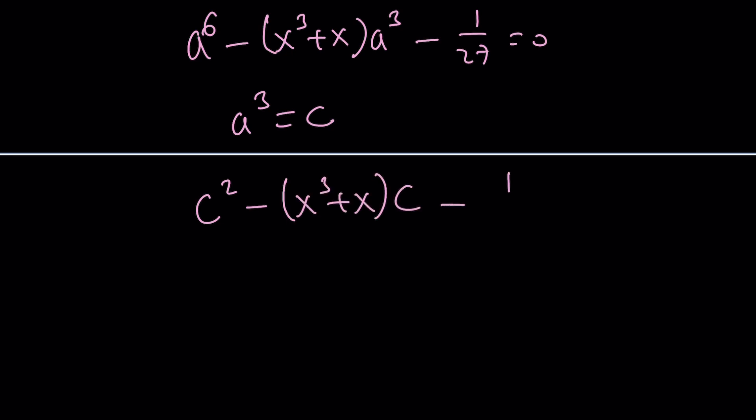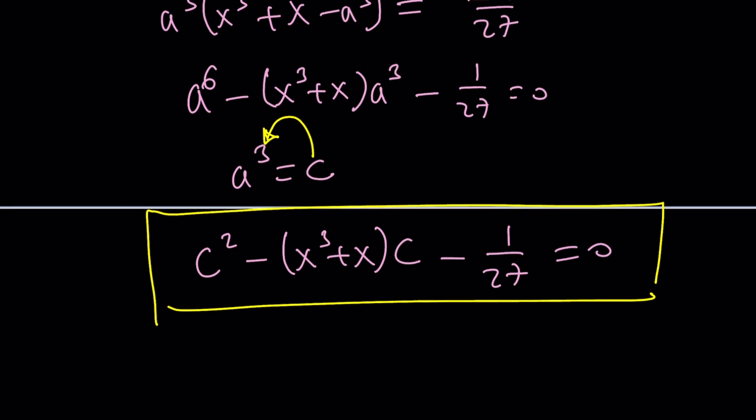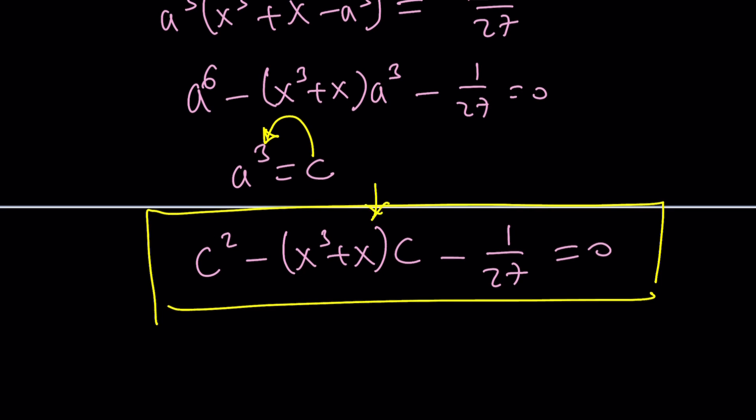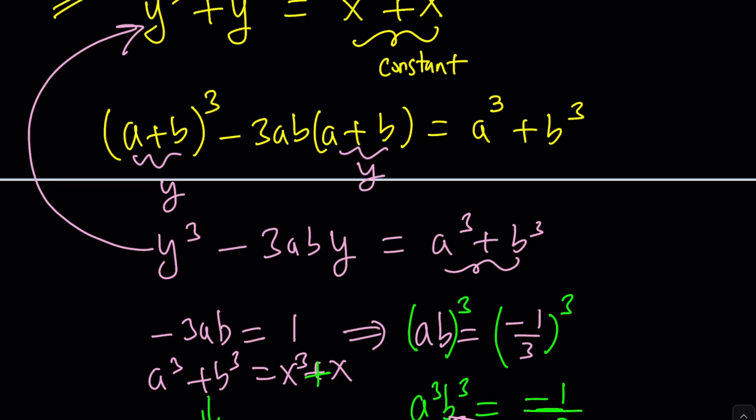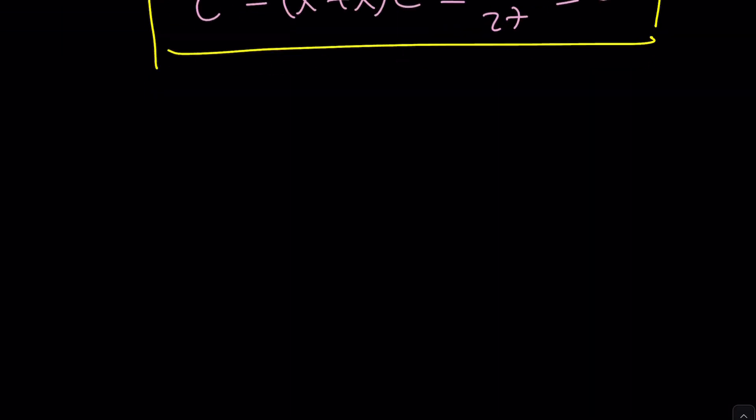And then once you set a cubed equal to c, then you can write this as c squared minus (x cubed plus x)c minus 1 over 27 equals 0. Notice that this is a quadratic equation in c. Once you solve it in terms of x, you're going to find c. And then by cube rooting, you're going to find a. But there are two values because this equation has two solutions. And then those are going to make up the a and b values. And then a plus b is going to make up the y value. So a lot of work, but this is one of the methods.